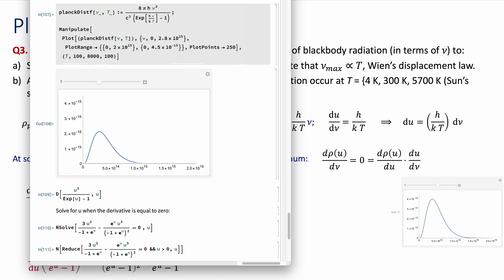Here I'm plotting Planck's distribution in terms of the frequencies at different temperatures, and you can see that if you follow the maximum, as the temperature goes down, the maximum is shifting to the left to lower frequencies. And if you increase the temperature, then the maximum is shifting to the right larger frequencies.